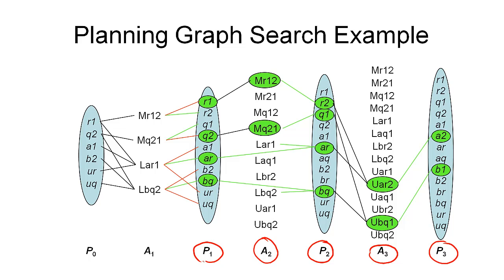So now, we proceed as before. We use the positive effect links to identify actions in action layer A1. And we can also use some no-op operations as shown here. But in addition to the no-op operations, we also need two of the actions listed here, namely those two.